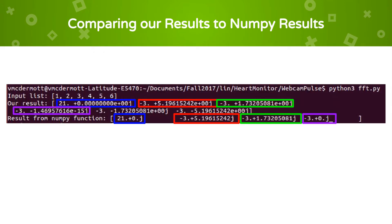We decided to compare the results of running our function for a simple example input list to running the built-in NumPy function that we were replacing in the webcam pulse application. The colors above show the values in our result which match up with the values in the result produced with the NumPy function. The two extra results in our result are the complex conjugates of the green and red results, respectively.